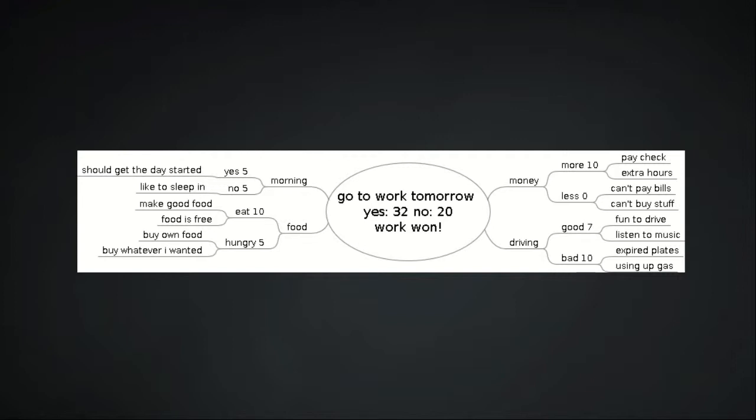Then make a new branch on each of the effects, one for yes and one for no. From there you can add up why yes and why no.